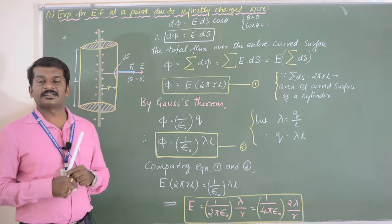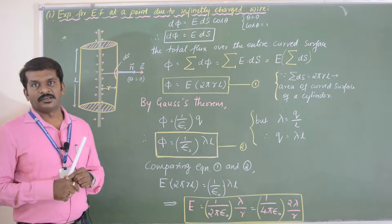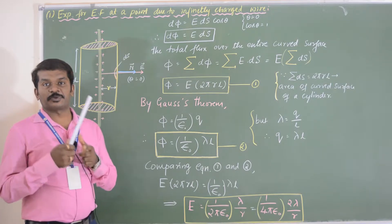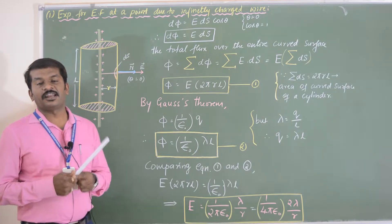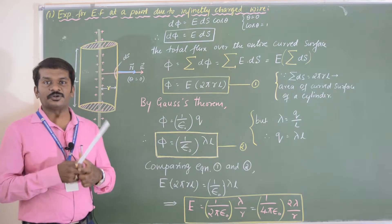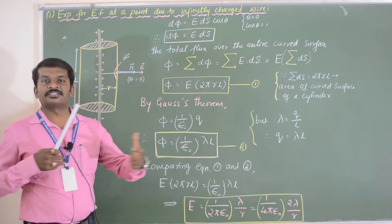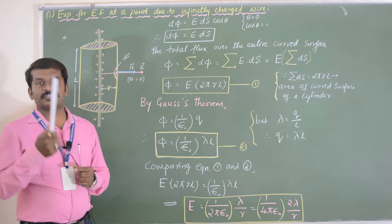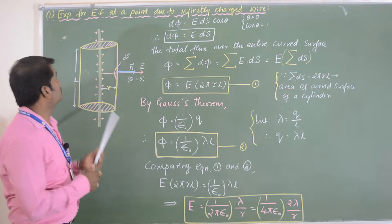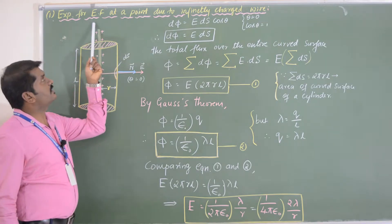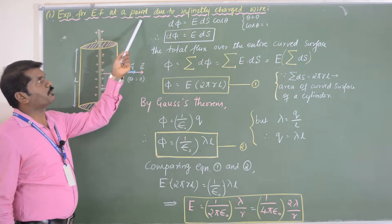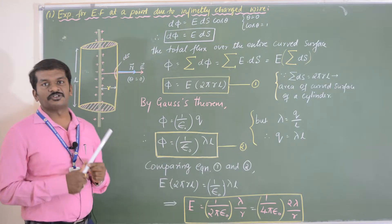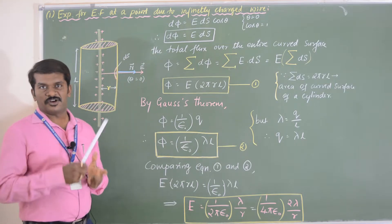We can choose the Gaussian surface as a closed surface of any shape and size, as long as it is in the electric field. Here, we are going to derive an expression for the electric field at a point due to different shapes of conductors. The first application is the expression for electric field at a point due to an infinitely charged wire using Gauss theorem.